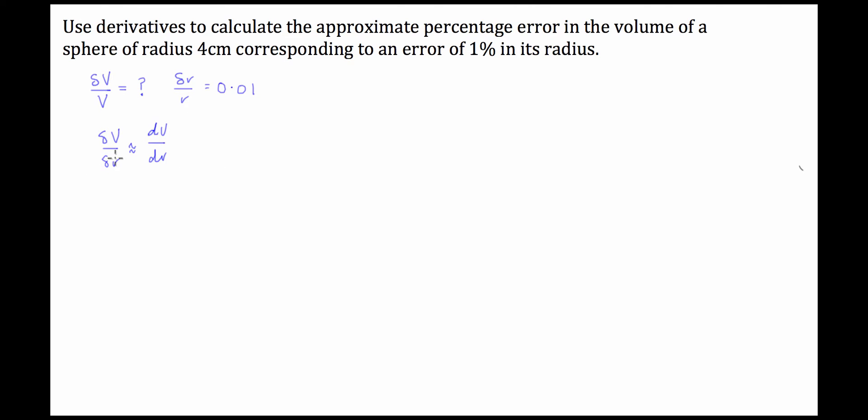So what we can then do is we know we can say that delta v can be approximated by dv over dr times by the incremental change in radius.